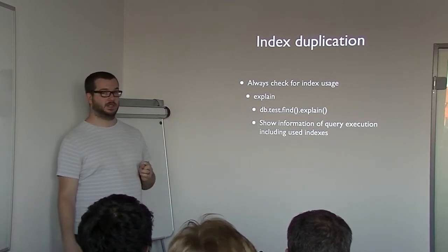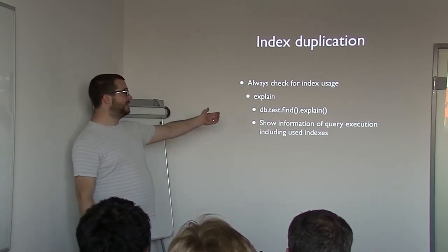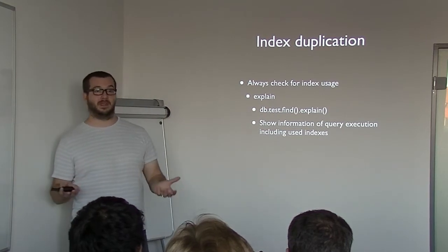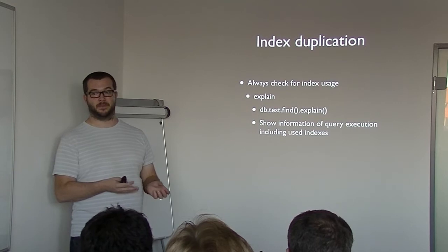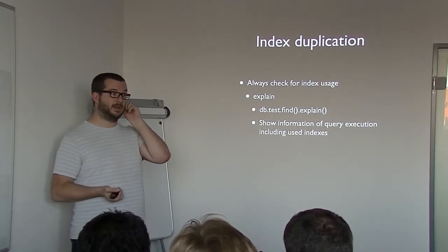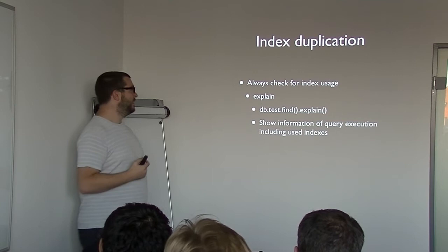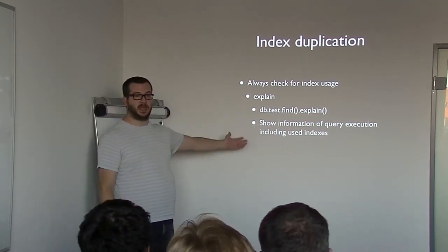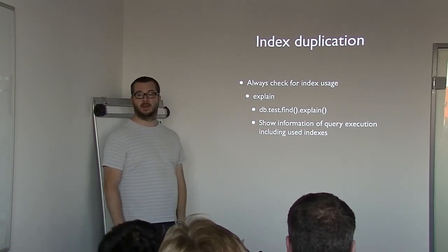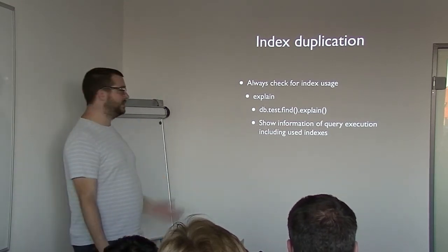Always check index usage when testing queries. Use the shell — do db.collection.find(...).explain() at the end. That gives you back a result telling you what the database server did to resolve the query. If you see 'BasicCursor' in there, it's most likely a problem unless it's a very small collection, because that means the database is going through every single record to answer the query. This is very useful for ops to check slow queries in logs — go back and look at exactly what the query is doing. It's the MongoDB version of relational database query plans.